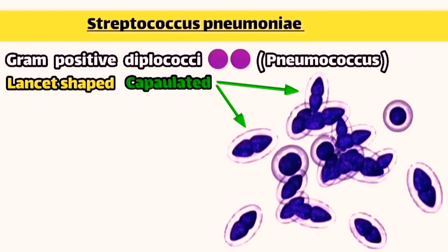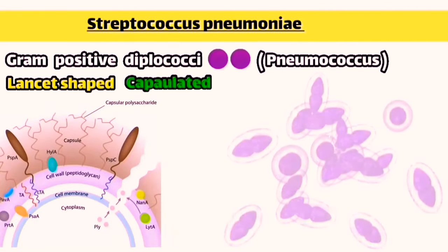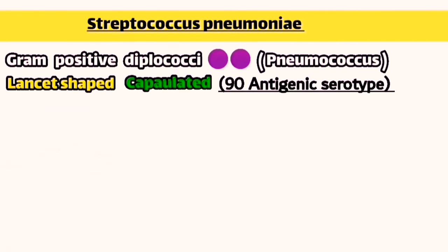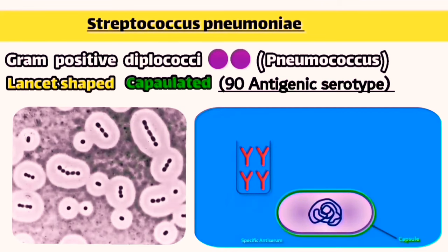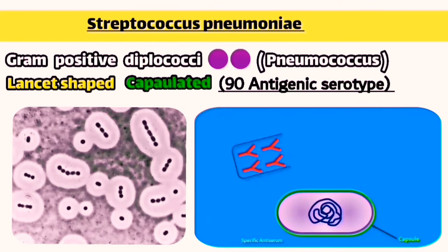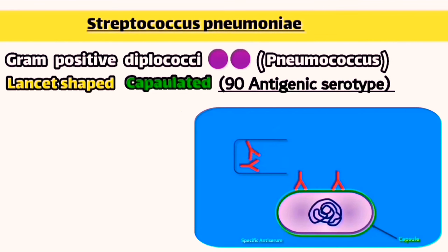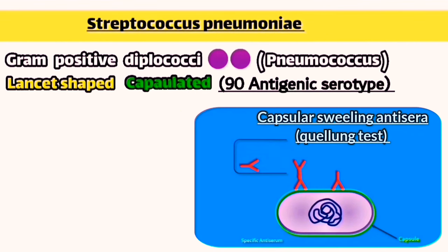The Streptococcus pneumoniae is branched into 90 different types based on this antigenic capsule, which produces different types of genes, proteins and toxins that vary from one serotype to another. They can be differentiated by a special reaction called the capsular swelling antisera.